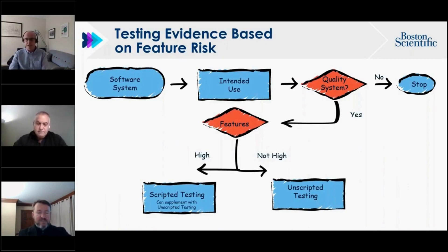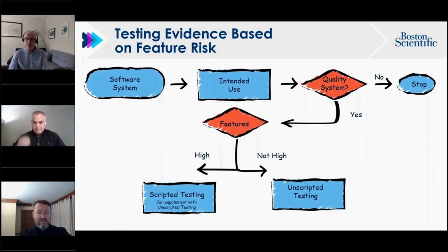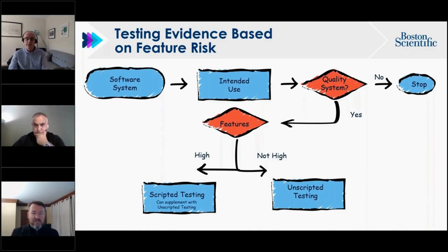At Boston Scientific, much of the guidance has already been implemented. They begin by assessing the system by looking at its intended use — it's all about intended use. They perform an initial triage of risk, determining whether the system is in the quality system, whether other regulations such as SOCs apply, and whether ERES is in scope.